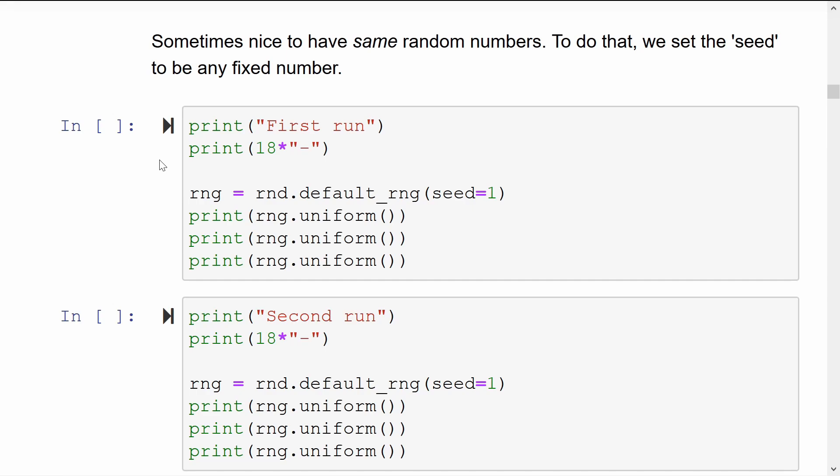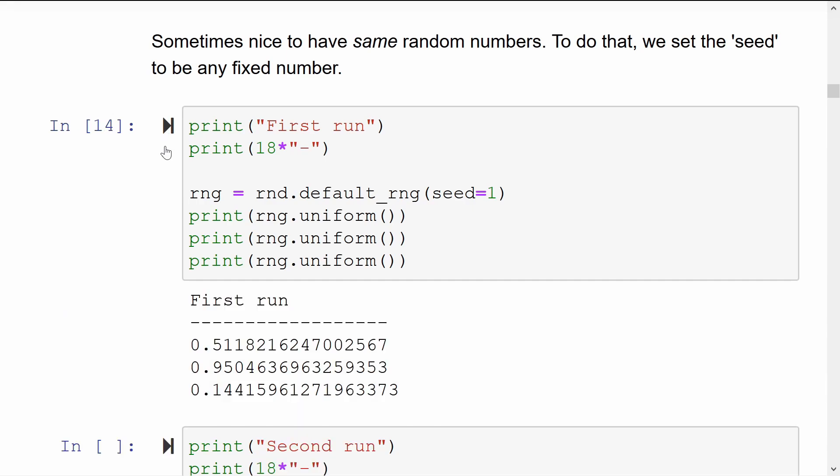The way you tell Python that you want to use a specific sequence of random numbers is to give a seed to the random number generator. Here, I just give it the value of 1. You can set the seed to any number that you like. With the seed of 1, the first three uniform random numbers in this sequence are 0.511, 0.950, 0.144.